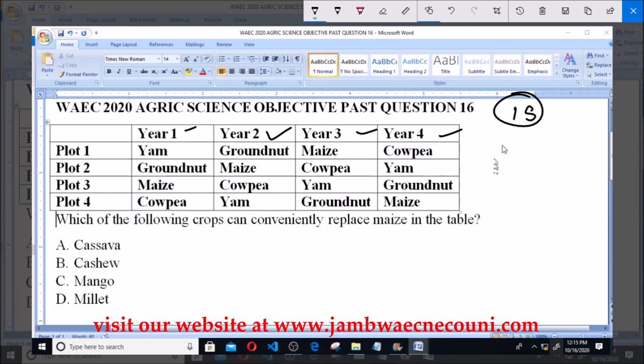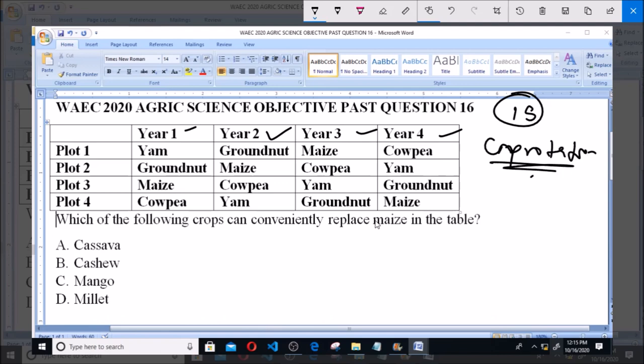Now, we have established the fact in question 15 that this is a crop rotation system. And in a crop rotation system, you plant one type of crop. Now, for example, maize is a cereal.